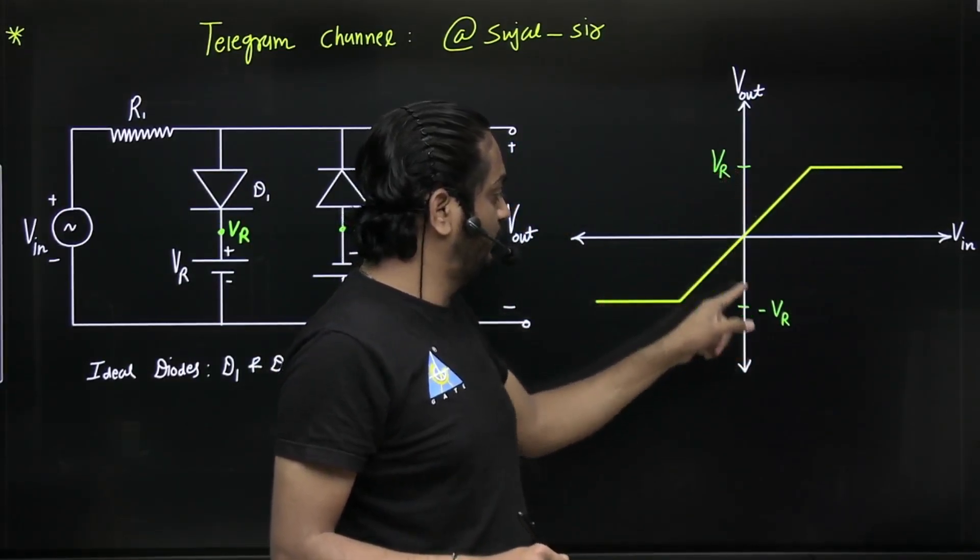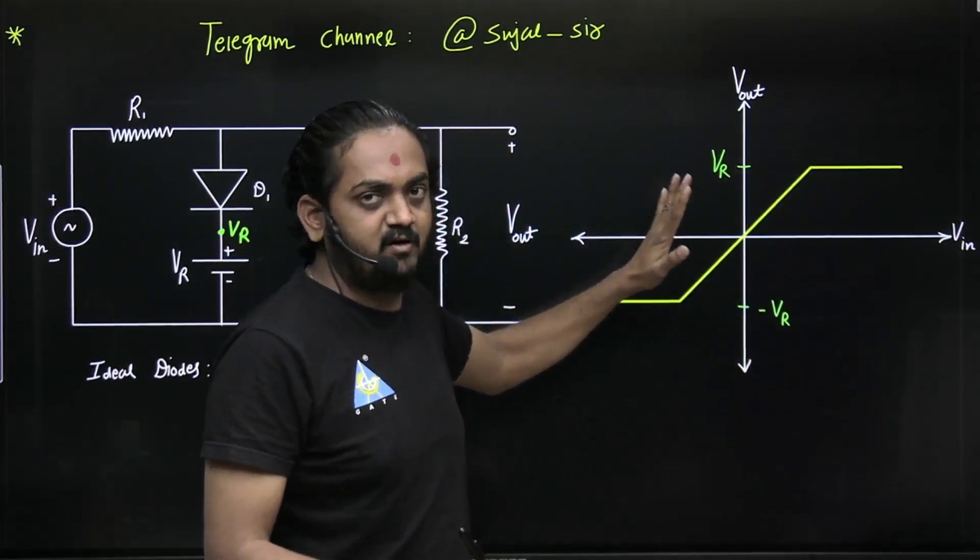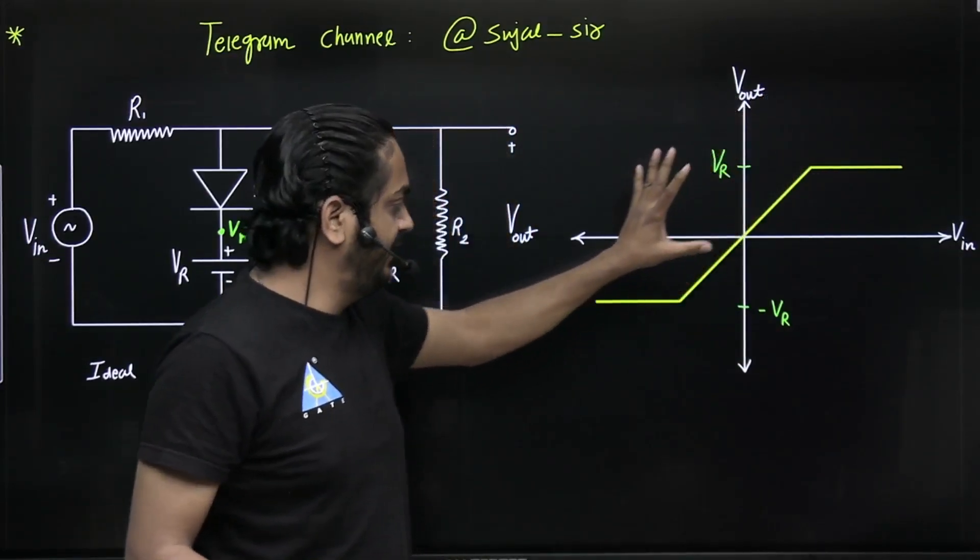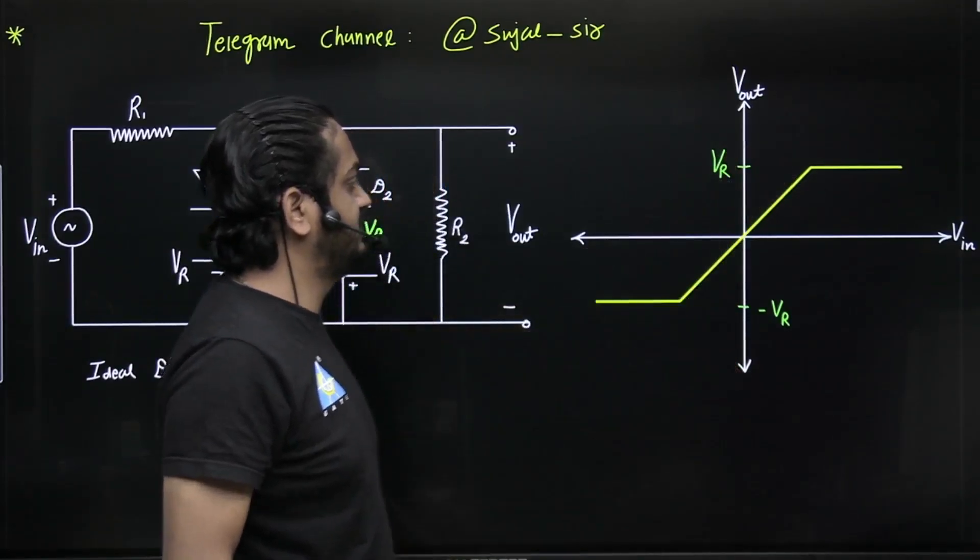Now what I am saying is both values should be positive, both values can be negative, both values can be positive, both values can be negative, one positive and one negative also. But shape will be same. The shape will be same. It can be in first quadrant if both positive, it will be in third quadrant both negative, and one positive one negative so it will be like this.